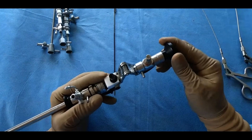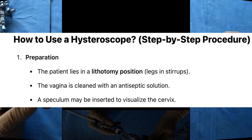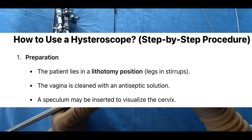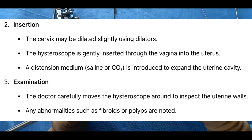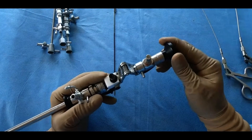How to use a hysteroscope: step-by-step procedure. 1. Preparation — the patient lies in a lithotomy position with legs in stirrups; the vagina is cleaned with an antiseptic solution; a speculum may be inserted to visualize the cervix. 2. Insertion — the cervix may be dilated slightly using dilators; the hysteroscope is gently inserted through the vagina into the uterus; a distension medium (saline or CO2) is introduced to expand the uterine cavity. 3. Examination — the doctor carefully moves the hysteroscope around to inspect the uterine walls; any abnormalities such as fibroids or polyps are noted.